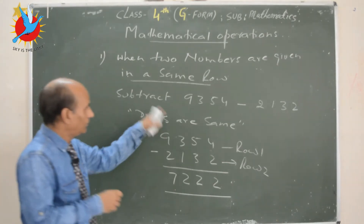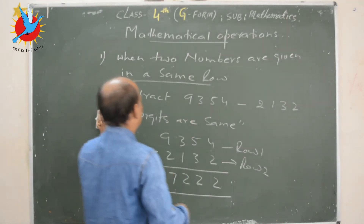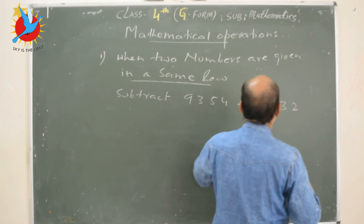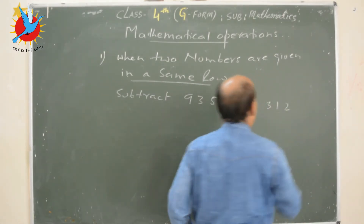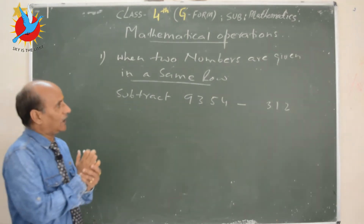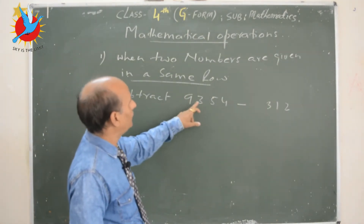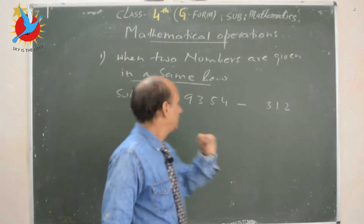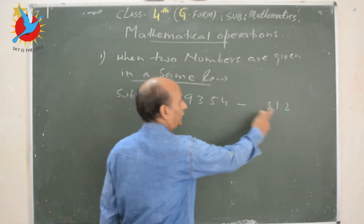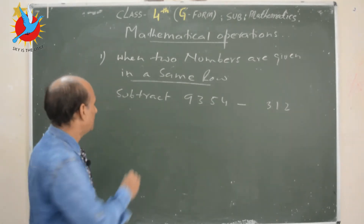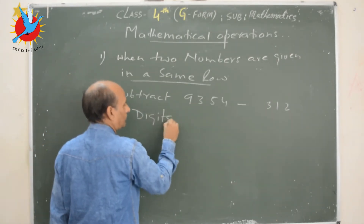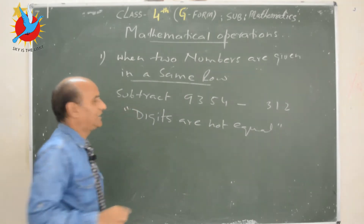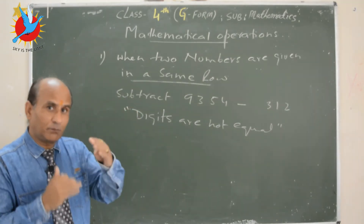The second case within form two is when the digits are not the same. Suppose the second number is 3 1 2. Count the digits of the first number: 1, 2, 3, 4 digits. Count the digits of the second number: 1, 2, 3 — only 3 digits. Since the number of digits of the first number is not equal to the number of digits of the second number, digits are not equal. When digits are not equal, how do we write the numbers in row form?